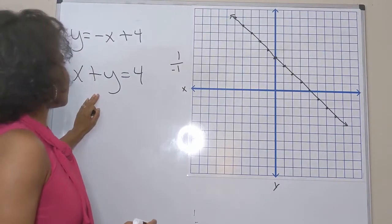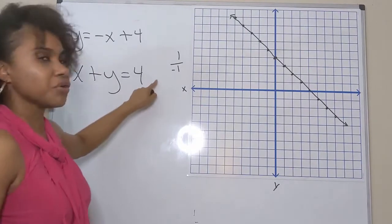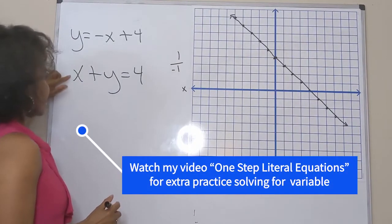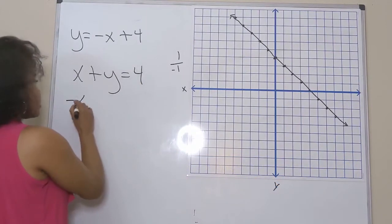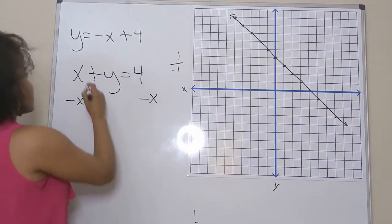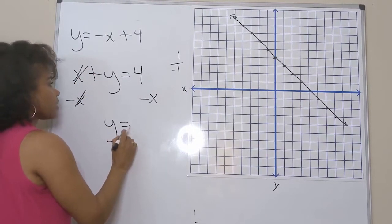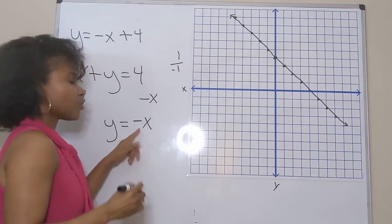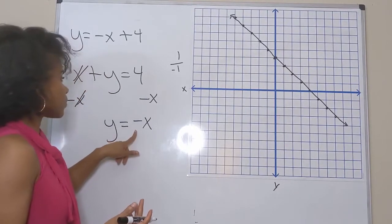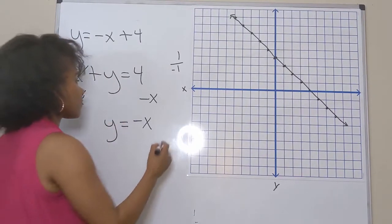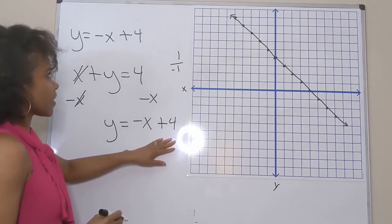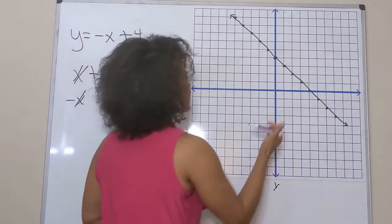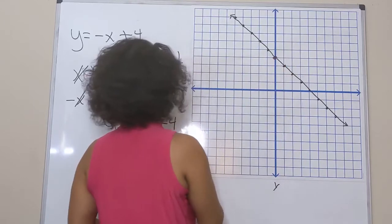I want to rewrite the second equation in slope-intercept form by solving for y. I move the x to the right-hand side using inverse operations — since it's a positive x I subtract x from both sides. It cancels on the left, giving me y equals negative x plus four, since the coefficient of x is the slope and the constant is positive four.